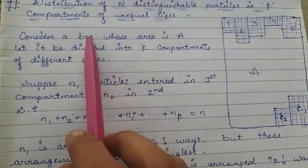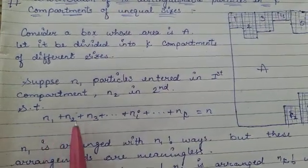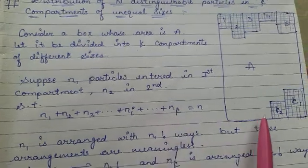If we add them, we have to distribute the total number of particles: N1 plus N2 plus N3 and so on, up to NK, because we have K compartments.